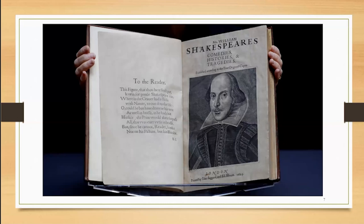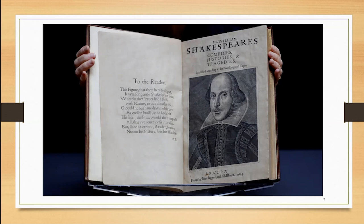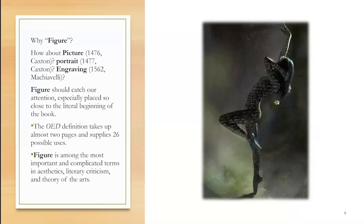The first words we can see are 'To the Reader,' followed by 'this figure.' The word figure refers to the engraving by Martin Droeshout the Younger, a talented young Dutch London printmaker from a printmaking family. I'm interested in the word figure. Why figure? Why not picture — available in print in England from 1476 — or portrait, available in 1477, or engraving, available in 1562?